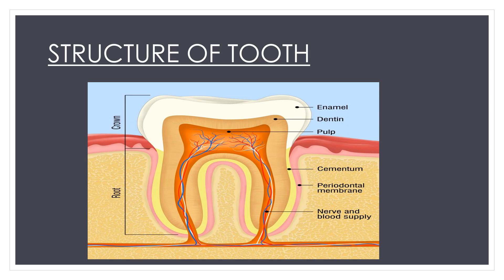Then, what is cementum? It is on the root of the tooth and is beneath the gum. So on the root of the tooth we have the cementum. The number and type of teeth a person has changes as they age. Typically people have two sets of teeth — the primary or baby teeth and the permanent or adult teeth — which I have already covered in my previous video.